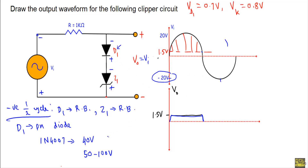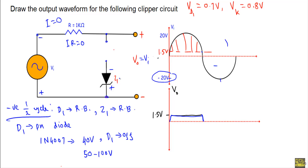That means during the negative half cycle, PN junction diode D1 will never conduct — it will always be in the off state. As D1 is in the off state, I can replace it with an open circuit. Once D1 stops conducting any current, the total circuit will be an open circuit. In that case, the current I will be equal to zero during the entire negative half cycle. That means the output voltage VO will be equal to VI, since I=0 means IR=0. Diode Z1 will also not conduct current and will be in the off state. So VO will be equal to VI during the negative half cycle.